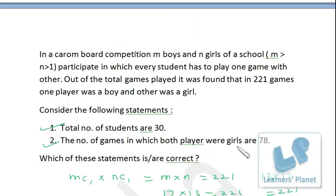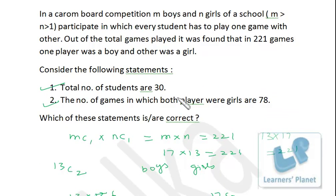So precisely, total M boys and girls, out of M boys, we are selecting 1, out of N girls, we are selecting 1. So in all, we are getting M into N ways. So M into N ways represents total number of games, which is 221.